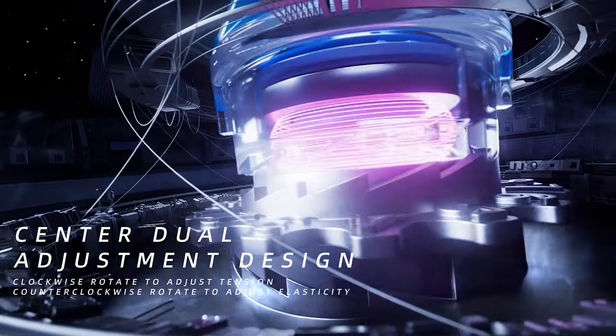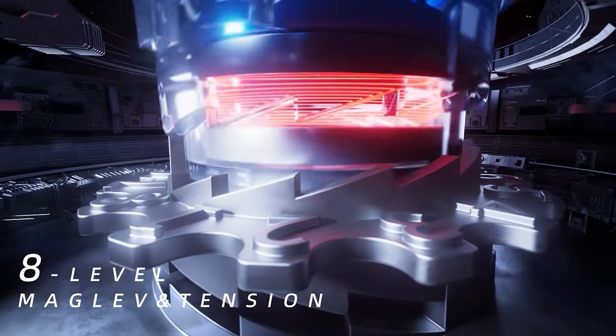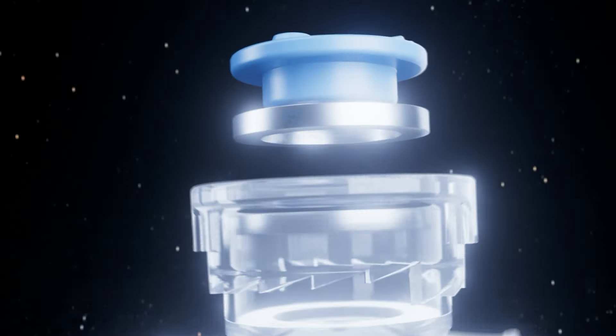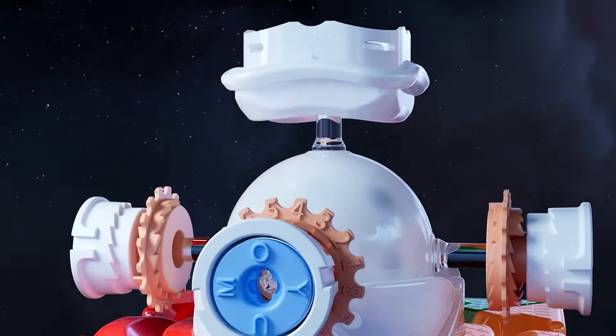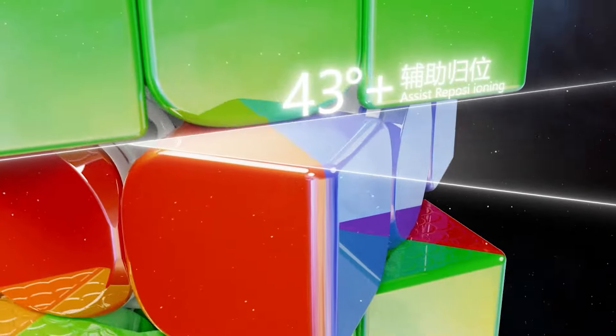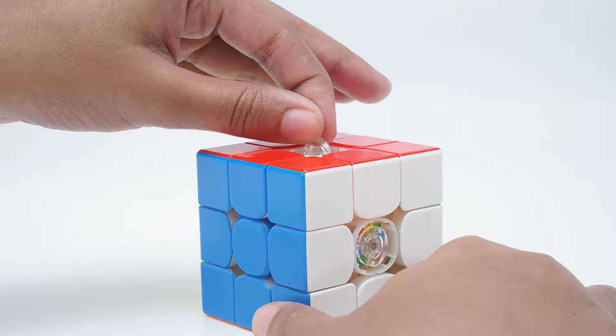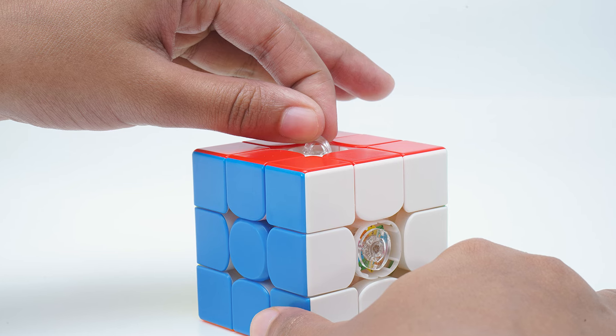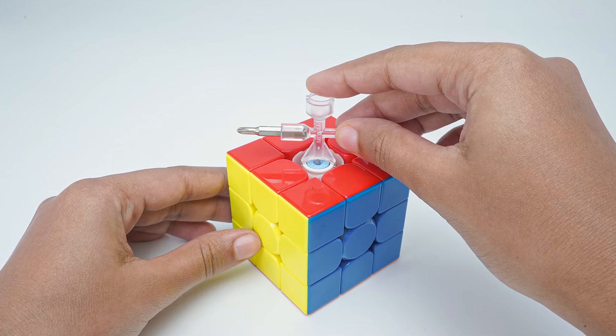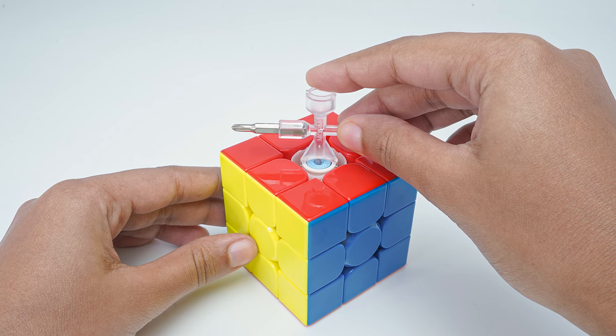On the other hand, the WRM V10 gives you a much larger set of combinations, with eight settings each for compression and tension, resulting in 64 possible combinations. However, adjusting these settings on the WRM V10 does require some tools, which are given in the accessories box, but if you're someone who loves adjusting your cube to find the perfect setup, the WRM V10 offers more variety.